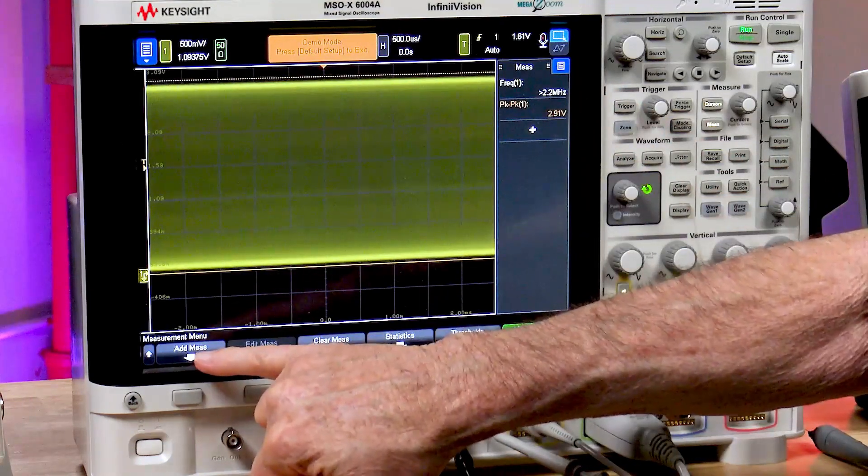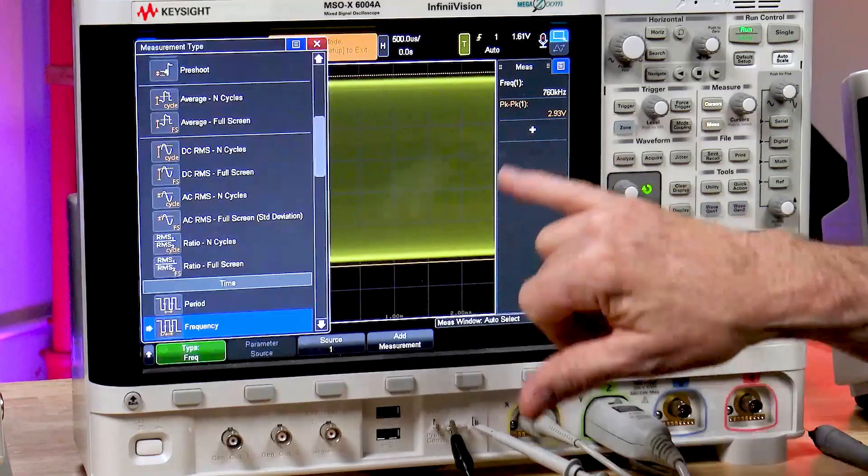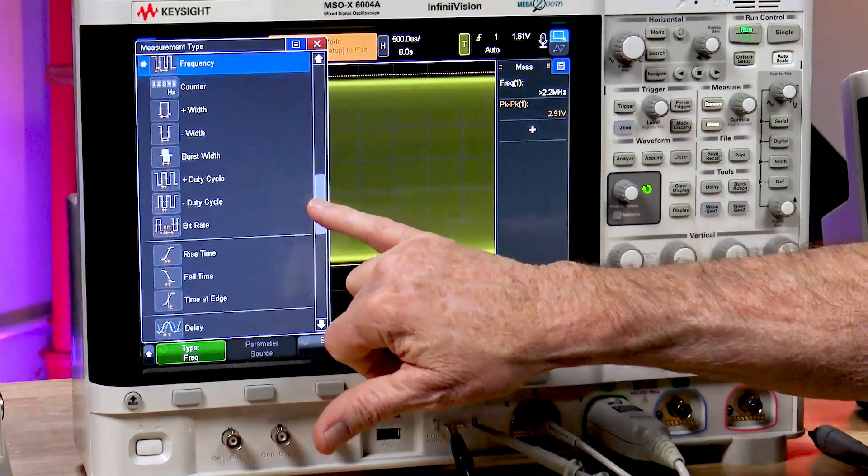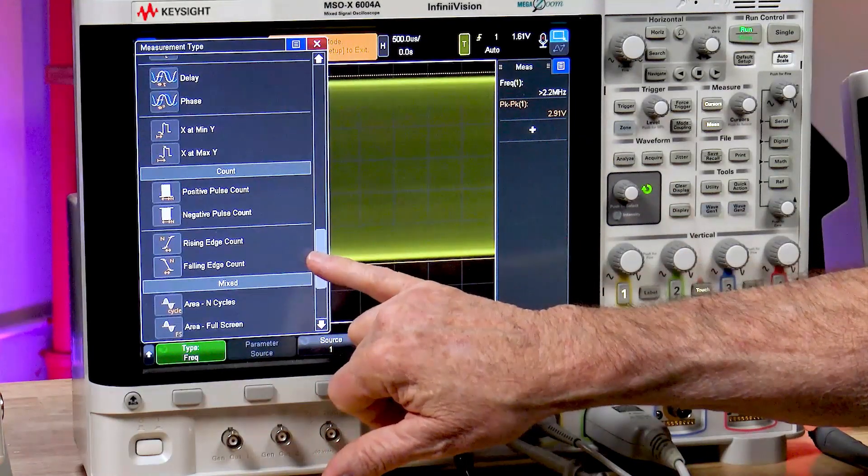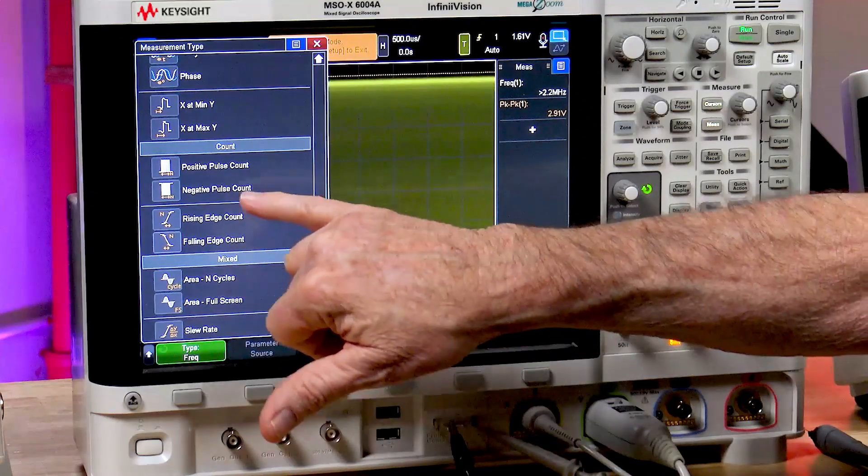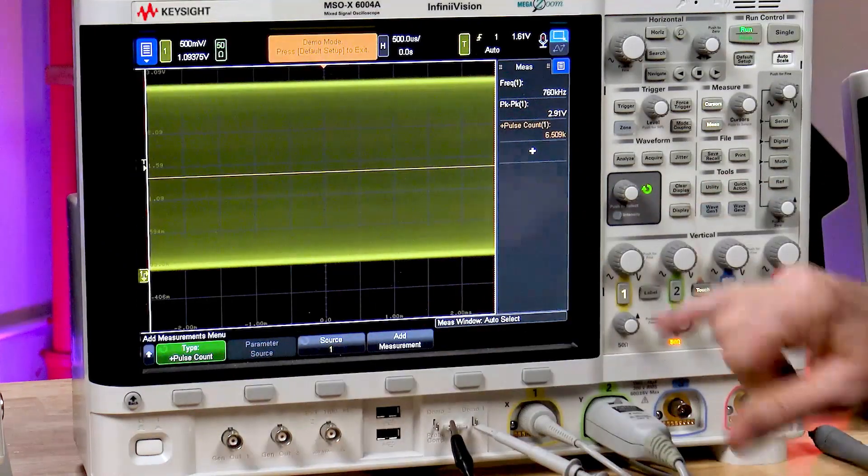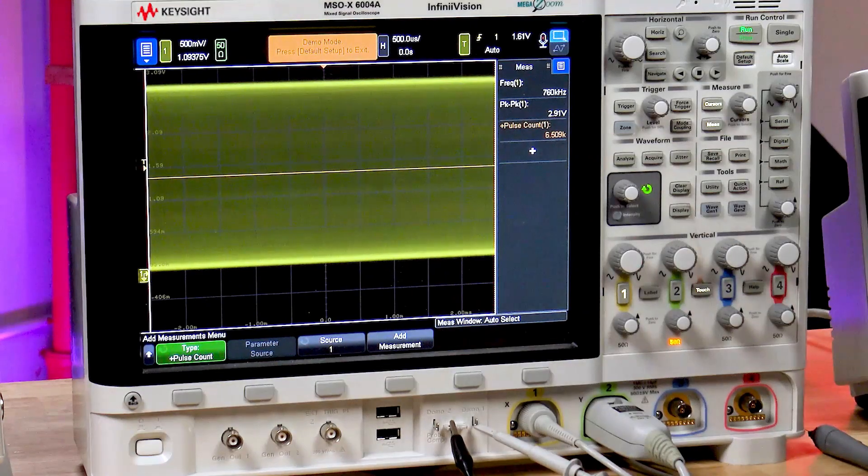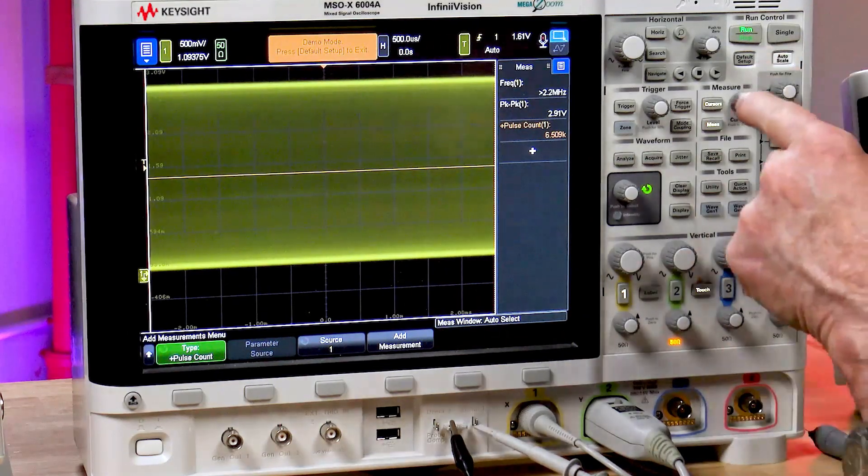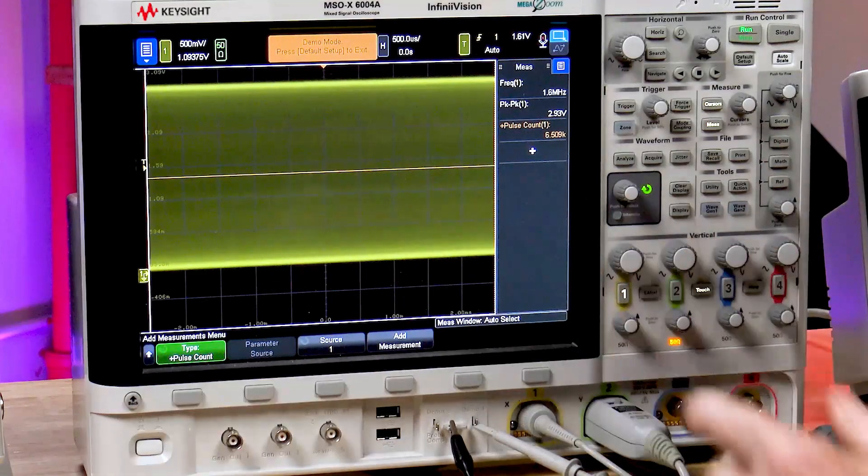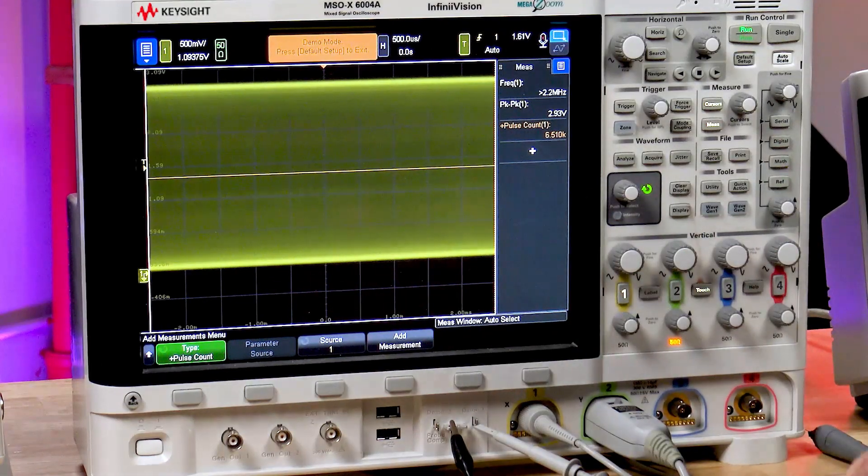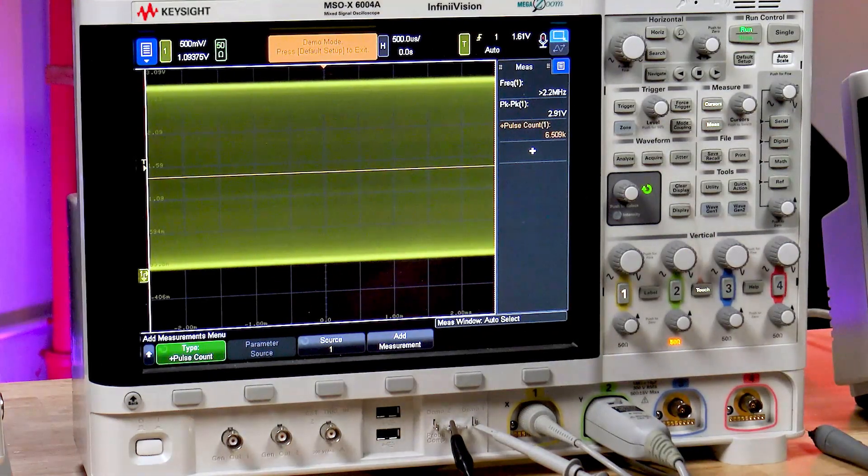I'm going to select a pulse count measurement. How many positive pulses are there? Well, there's about six and a half thousand. That means there's about 13,000 edges that we're going to be performing timing measurements on.